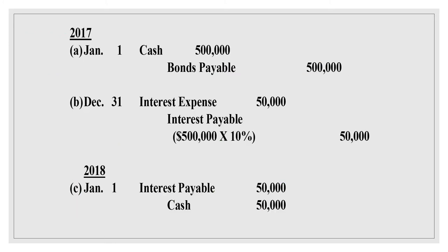On January 1, 2017: Cash debit $500,000; Bonds Payable credit $500,000. On December 31: Interest Expense debit $50,000; Interest Payable credit $50,000 — which is $500,000 times 10%. We pay the interest on January 1, so on January 1, 2018: Interest Payable debit $50,000; Cash credit $50,000.